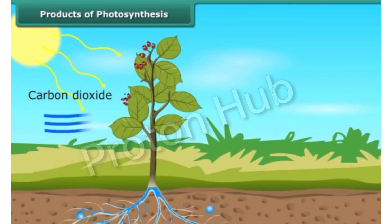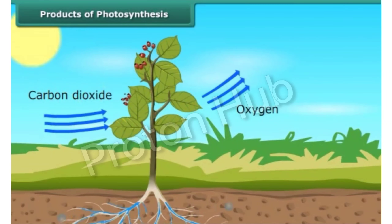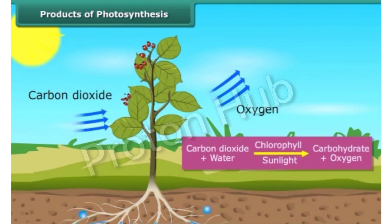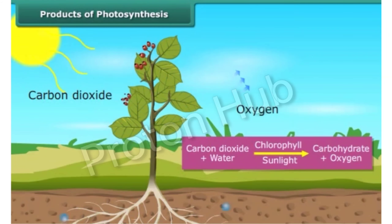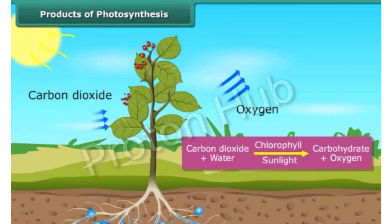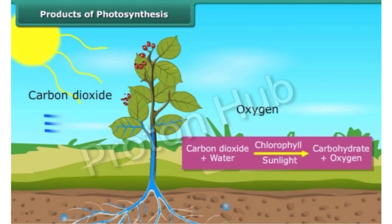Starch is also an example of carbohydrate. In this process, oxygen is also released. Therefore, the process of photosynthesis can be represented as: carbon dioxide plus water, in the presence of chlorophyll and sunlight, gives carbohydrate plus oxygen.